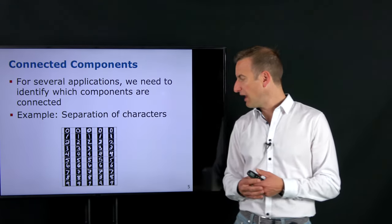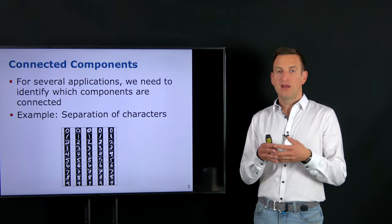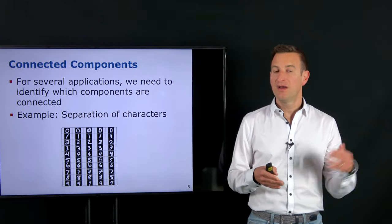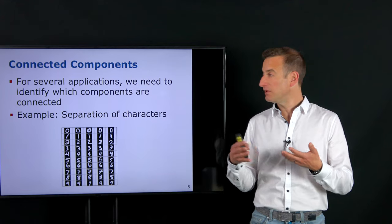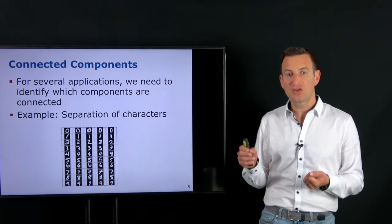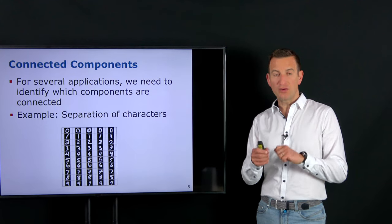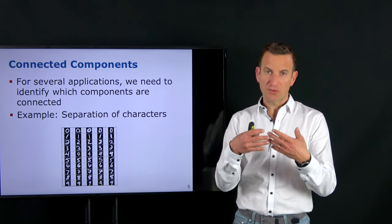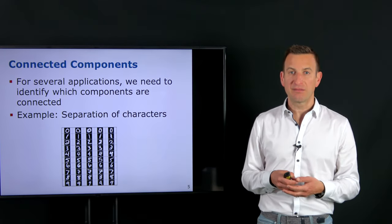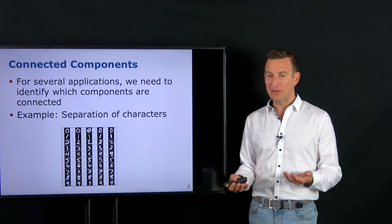We may use connected components in the context of handwritten digits, identifying what is a digit itself — a 1, a 2, a 3 — in order to separate them in a document. Just computing connected components may not be sufficient, because sometimes two digits are written very close and actually connected, or a character is broken into two non-connected components. But computing connected components is a first step and is used in a large number of activities.